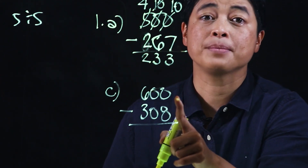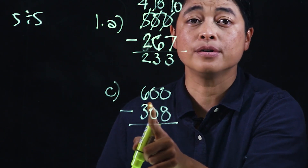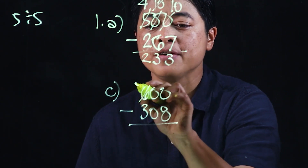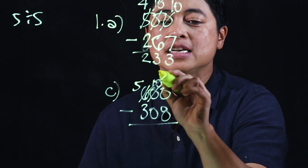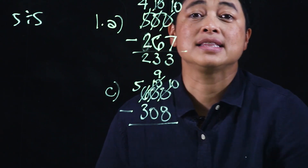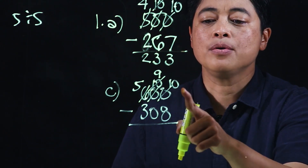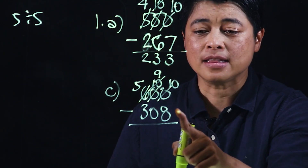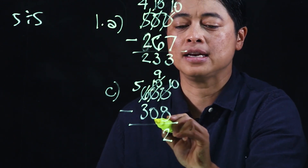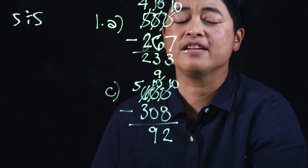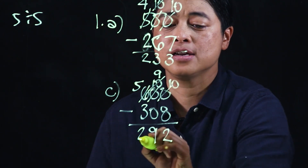Similarly here, we cannot take away 8 from 0; we cannot borrow from 0, so we need to borrow from the 5. This makes it 10, which makes this 9, and this makes it 10. So now we take 10 minus 8, which is 2. Then 9 minus 0 is 9, and 5 minus 3 is 2.